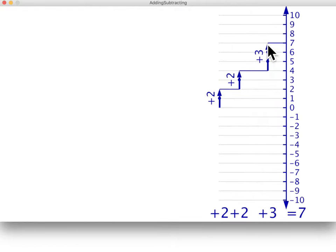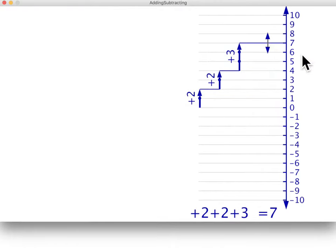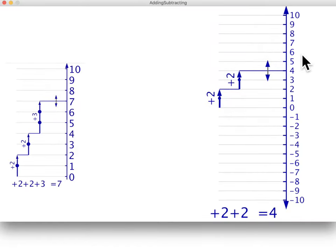Subtracting is the same as taking away, so we can subtract any step by deleting it from our path. Subtracting or deleting the plus three step brings us back to a total of four, a value change of minus three.